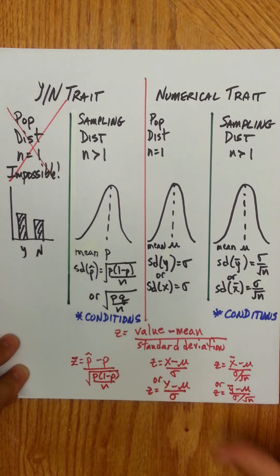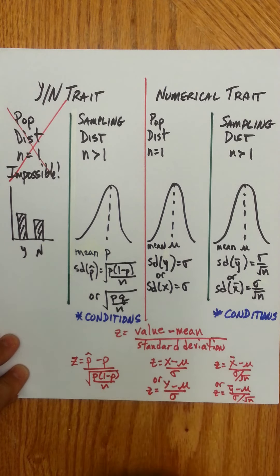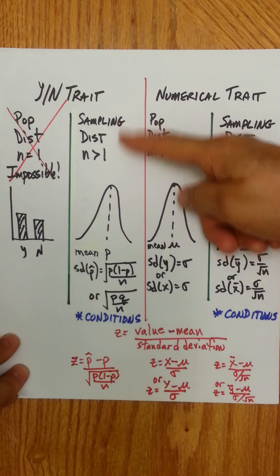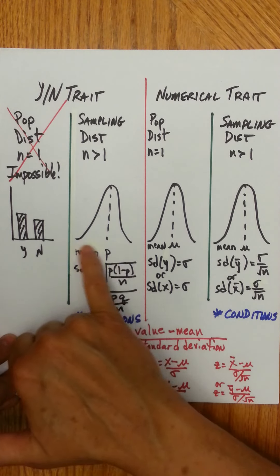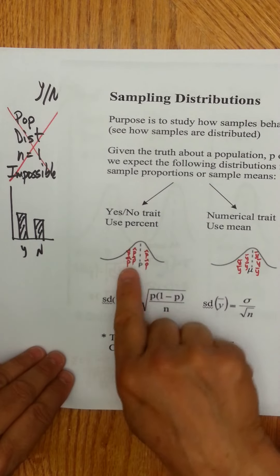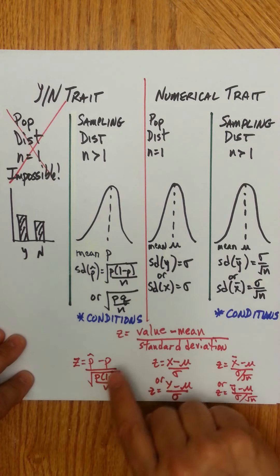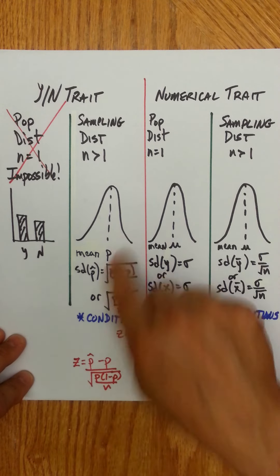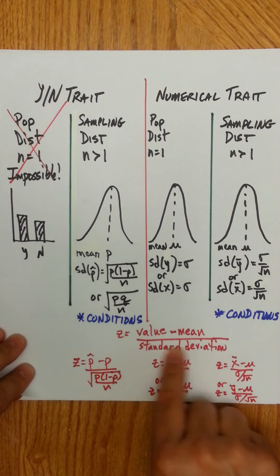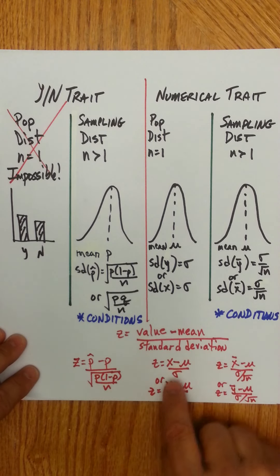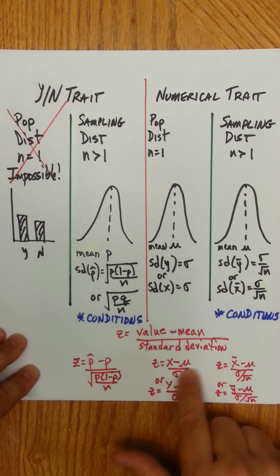The z-score essentially has this form: it's whatever value you're talking about, how far it is from the mean, divided by that particular standard deviation. For a yes-no trait, since only a sampling distribution is possible, the z-score is p-hat minus p divided by the standard deviation. For a numerical trait — population distribution — it's the value (x or y, i.e., a specific height) minus mu divided by sigma. For a sampling distribution, it's the y-bar or x-bar minus mu divided by sigma over square root of n. It's the same basic format: value minus mean over standard deviation for that distribution.